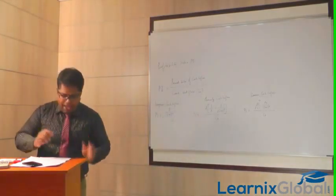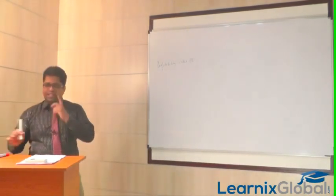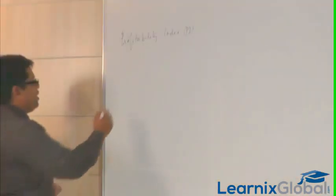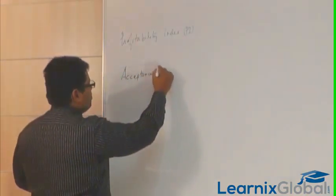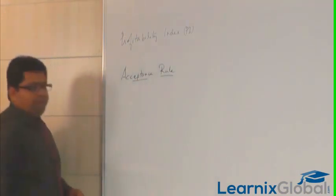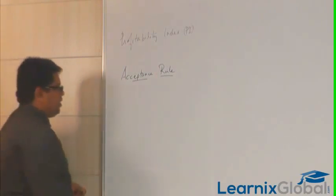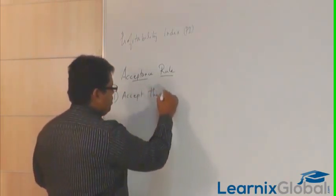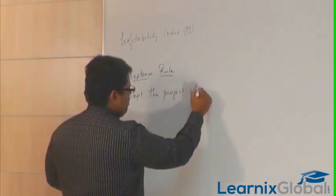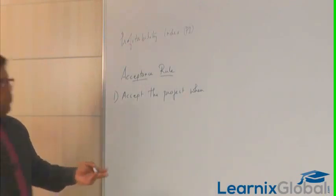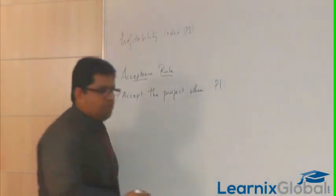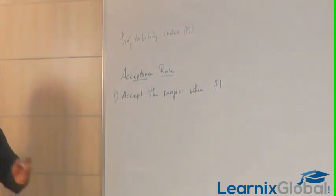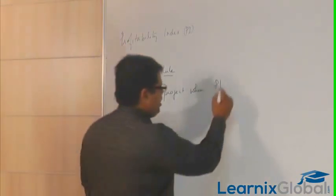Now, the acceptance rule of profitability index. There are three types: if the profitability index is equivalent to one, you are in no profit, no loss. If it is greater than one, you are in profit. If it is less than one, you are in loss. So accept the project when the profitability index is greater than one.